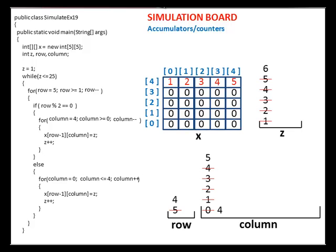Column is set to 4. Column greater than or equal to 0 is true. Execute the statements underneath. Assign the value of z, which is 6, to x 3, 4. Increment z. Loop. Decrement the value of column. The loop continues to execute until column reaches the value of negative 1. At the end of the for loop, z is already 11.